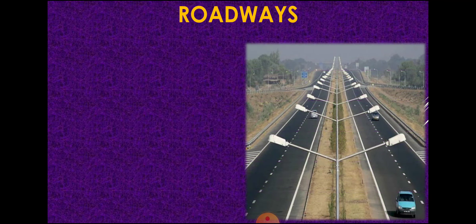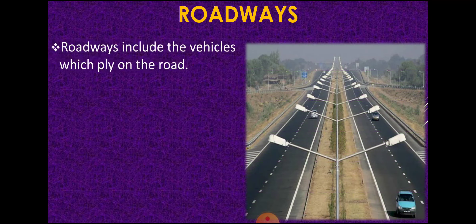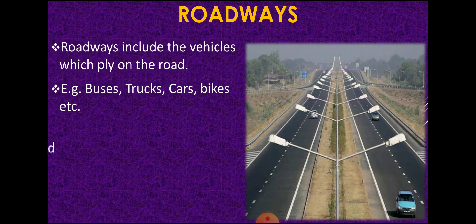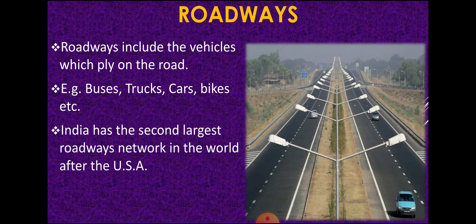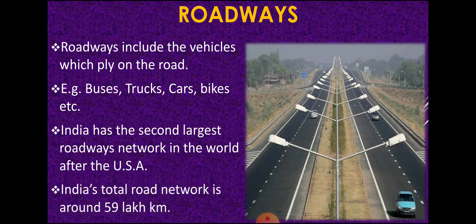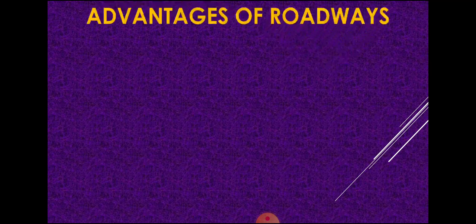Let us first talk about roadways, specially roadways in India. Roadways include vehicles like buses, trucks, cars, bikes, etc. India has the second largest roadways network in the world after the United States of America. India's total road network at present is around 59 lakh kilometers. Now let us talk about the advantages of roadways compared to railways, airways, and waterways.